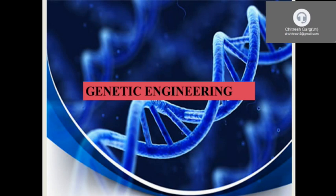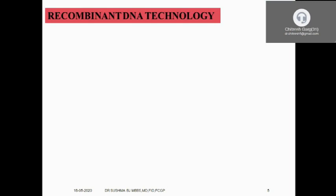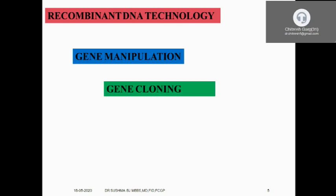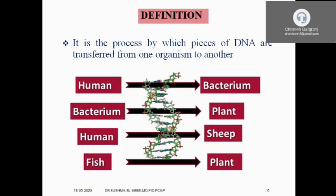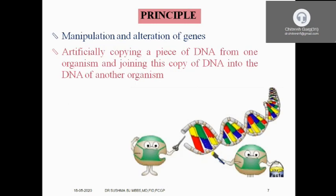The credit goes to genetic engineering, which has solved this problem in the modern era. Today we discuss biotechnology or genetic engineering, also called recombinant DNA technology, gene manipulation, gene cloning, genetic modification, or new genetics. It is a process by which pieces of DNA taken from one organism are transferred into another organism — for example, human DNA into bacteria, bacterial DNA into plants, or human genes into sheep and fish.